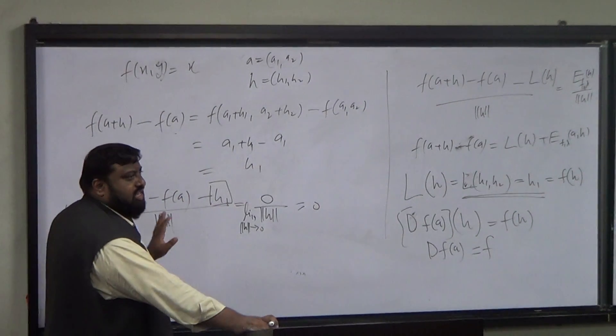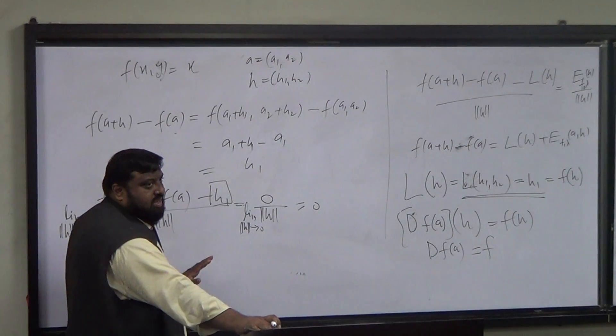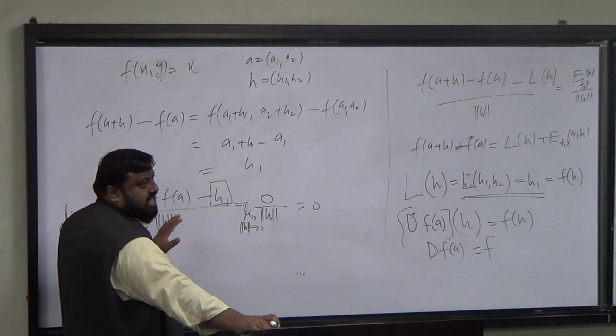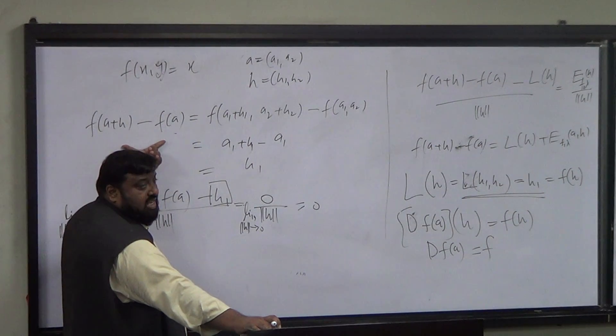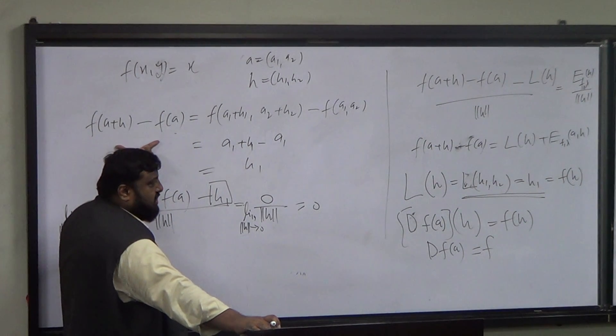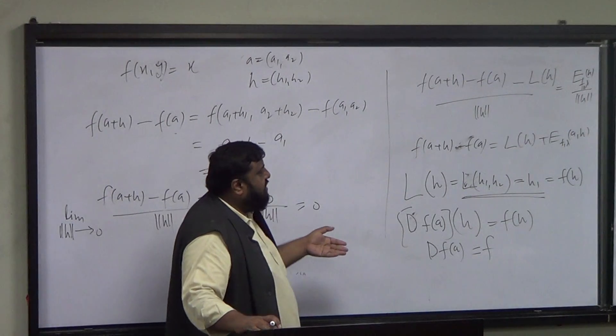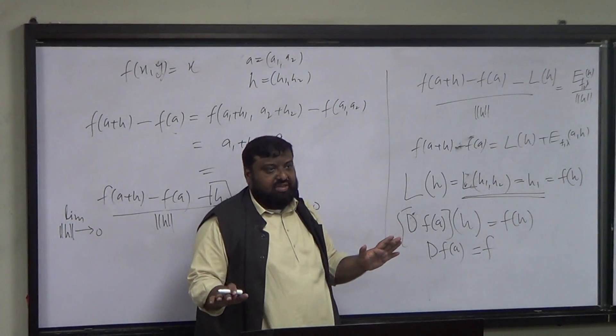So the computational trick is this: if you want to compute the derivative of scalar-valued functions, what you can do is compute this difference. When you compute this difference, you will always see that there will be two terms appearing.